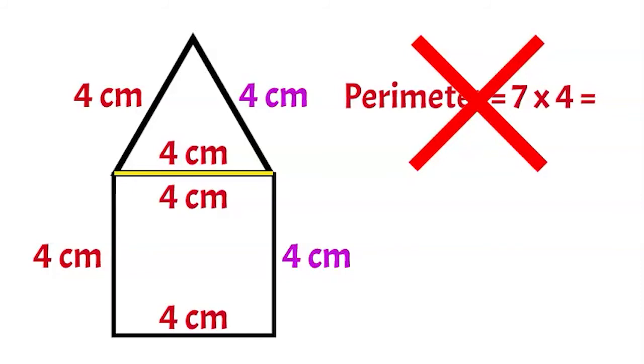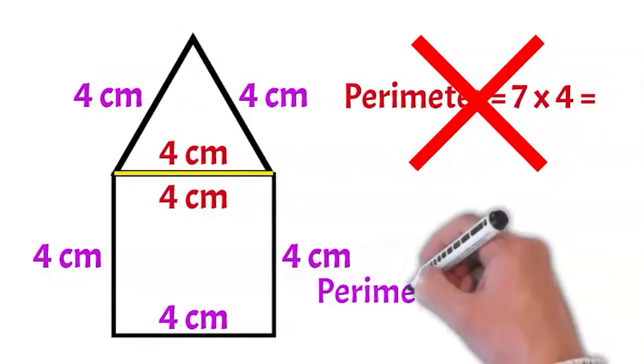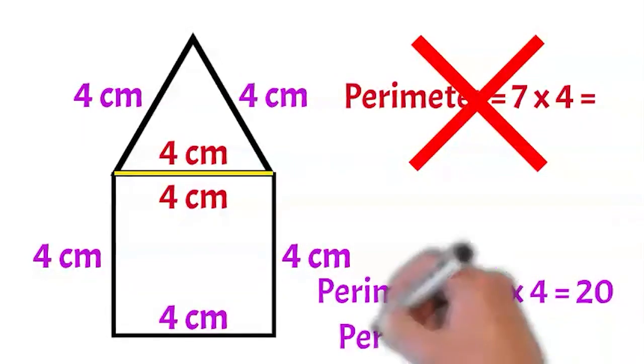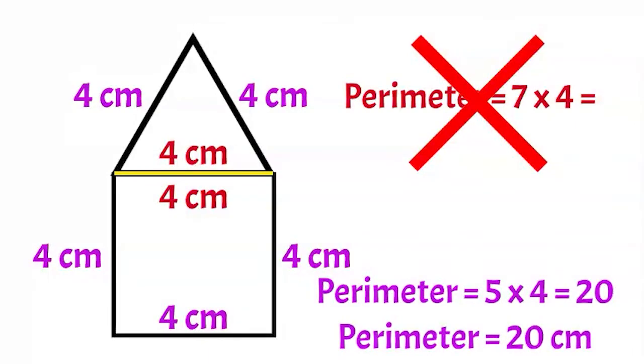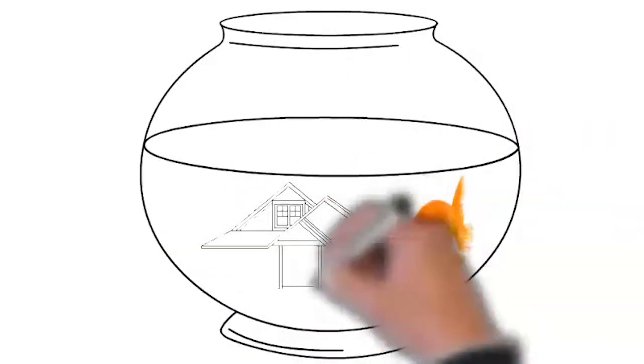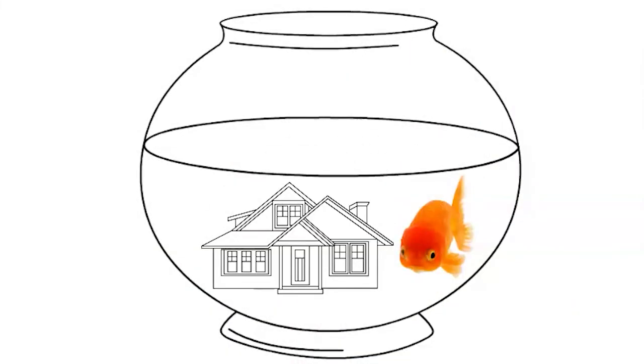I have one, two, three, four, five edges that are each four centimeters long, so my perimeter is five times four equals twenty centimeters. That's much better! It looks like you need a little house for your fishbowl. Here you go.